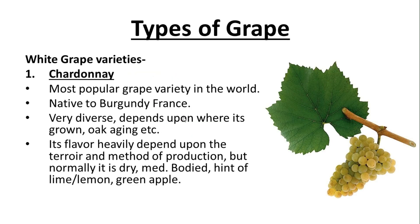The first type of grape variety is Chardonnay — the most popular grape variety in the world. It is native to and originated in Burgundy, France.